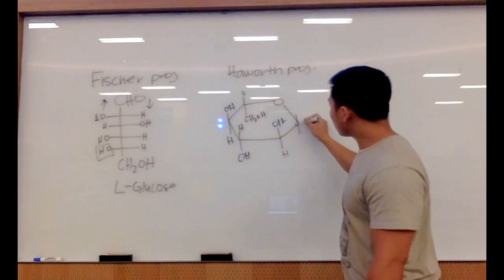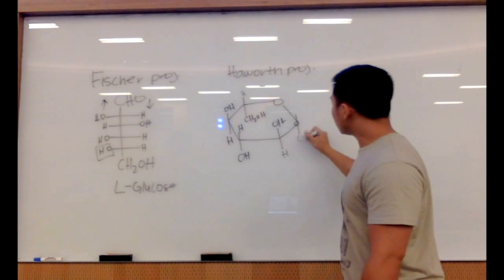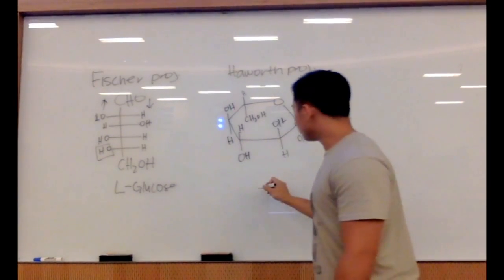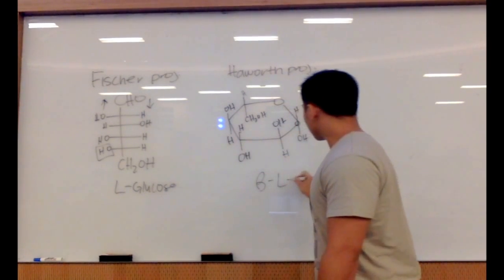All right, now for our anomeric carbon. We're going to start with a beta. So this is going to be beta-L-glucose.